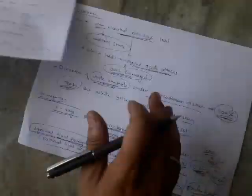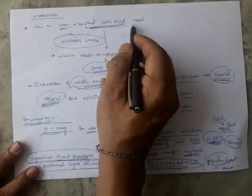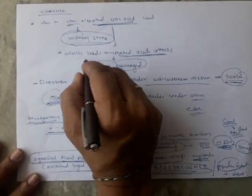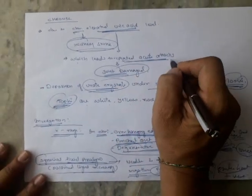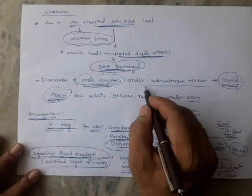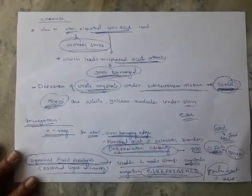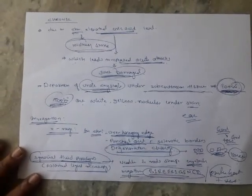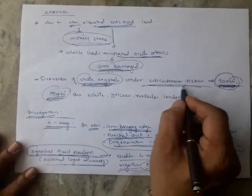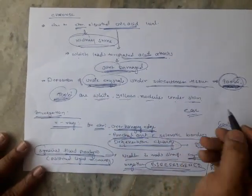Coming to the chronic conditions: due to chronic elevated uric acid levels, it may lead to urolithiasis, that is kidney stones. It may also lead to repeated attacks of acute gout and joint damage. The deposition of uric acid crystals under the subcutaneous tissue is called tophi. Tophi are white to yellow nodules under the skin.